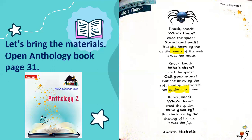Let's get into the third one. It's so easy to know, right? Even without the spider seeing, the sound they make or their actions tells the spider who the person is. Knock, knock — who is there? Cry the spider. Who goes by? But she knew by the shaking of her neck, it was the fly. So who came in the third time? It was the fly. And how did the spider know it was the fly? By the shaking of her neck. Whenever the fly enters, she shakes the neck of the spider.